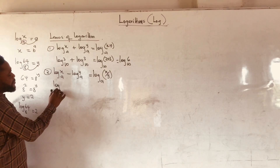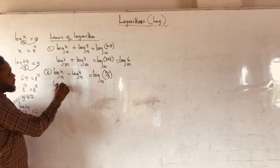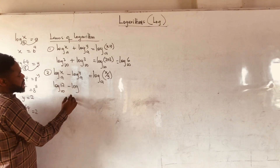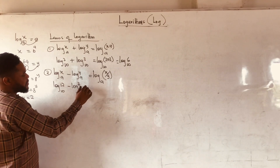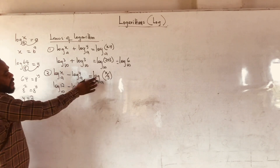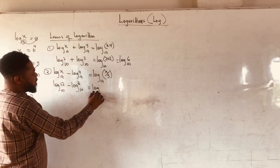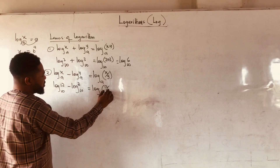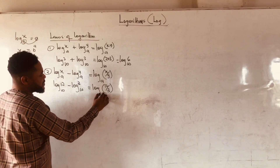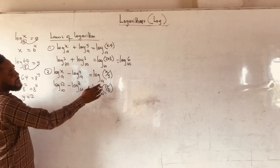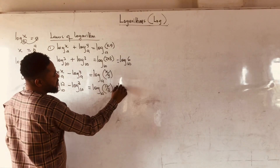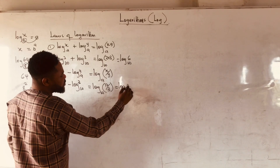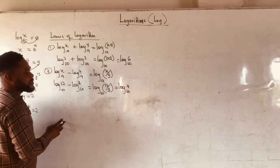Let us look at an example. Log 12 base 10 minus log 3 base 10. From the law, I am going to have log of 12 over 3, base 10. And I can simplify this as 12 divided by 3 will give us 4, so log 4 base 10.